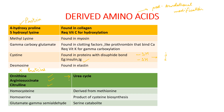Homocysteine is derived from methionine. Homoserine is a product of cysteine biosynthesis, and glutamate gamma-semialdehyde is a serine catabolite.